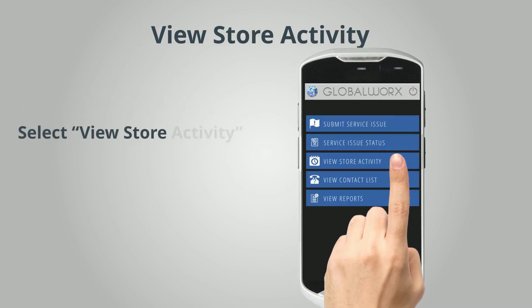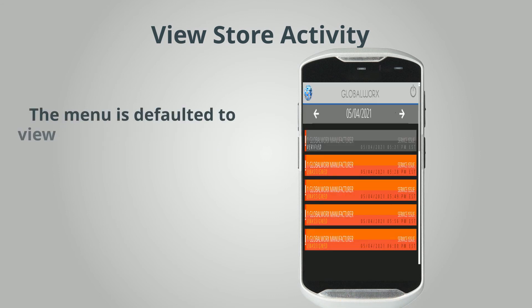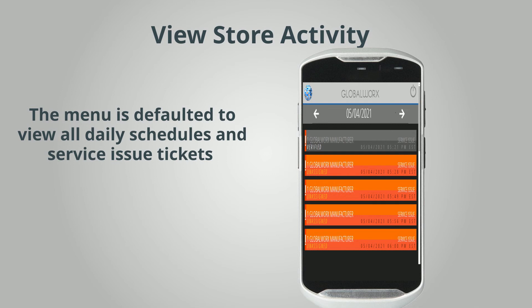View Store Activity. Select View Store Activity from the main menu. The menu is defaulted to view all daily schedules and service issue tickets.